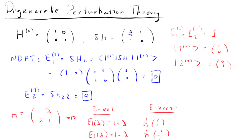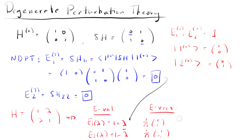There are a lot of problems here. The first problem: we see that the first order energy correction is 0 from non-degenerate perturbation theory, but in reality it's definitely not 0 — it's actually 1. So we need to think about what happened and what went wrong here.